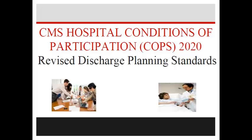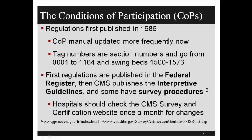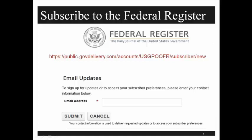On slide four, the CMS has a 542-page manual known as the Conditions of Participation. They have section numbers or tag numbers, and they are updated more frequently. As we walk you through, we will talk about the new changes, and we don't know what the tag numbers will be for the new changes because they haven't implemented that yet.